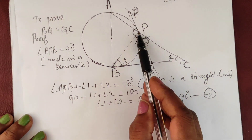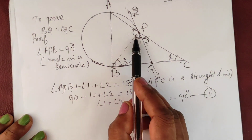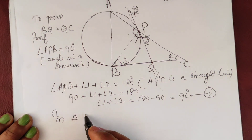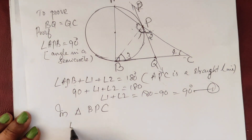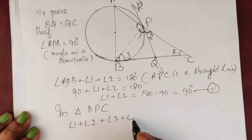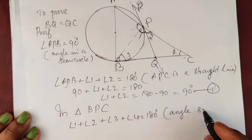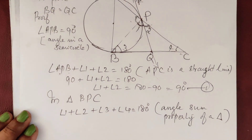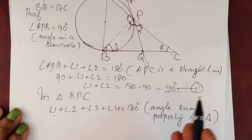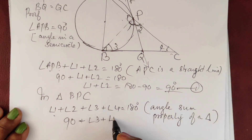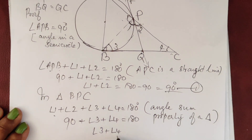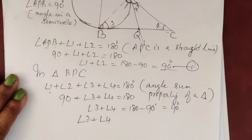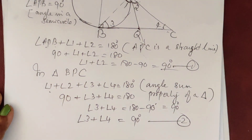Now, in triangle PBC: angle B plus angle 3 plus angle 4 equals 180 degrees, by the angle sum property of a triangle. Also, BC is a straight line, so this gives us equation 2: angle 3 plus angle 4 equals 90 degrees.